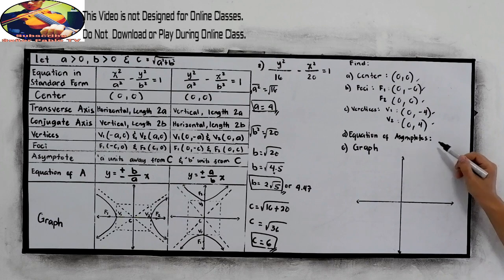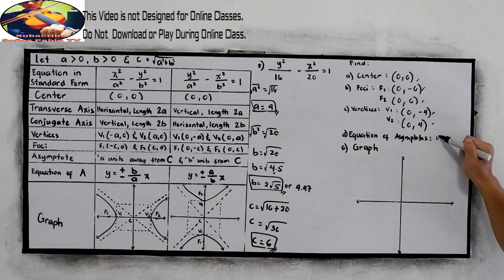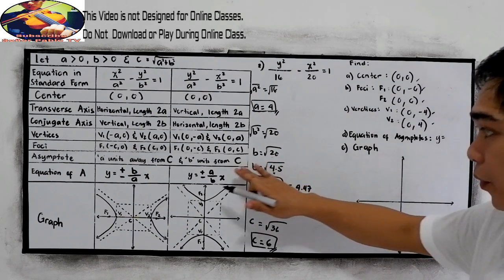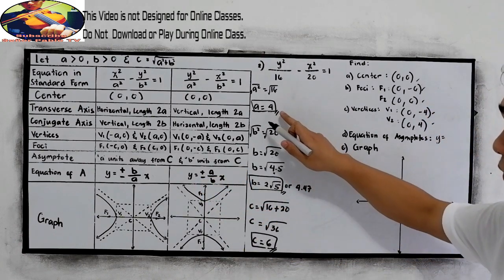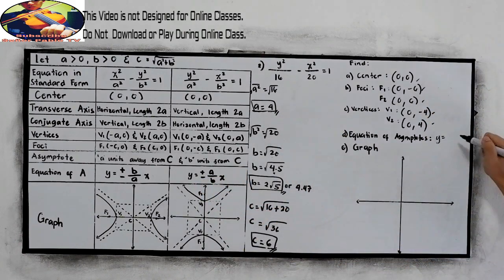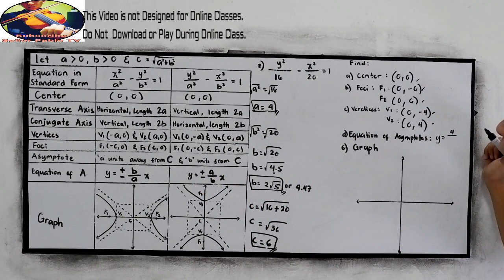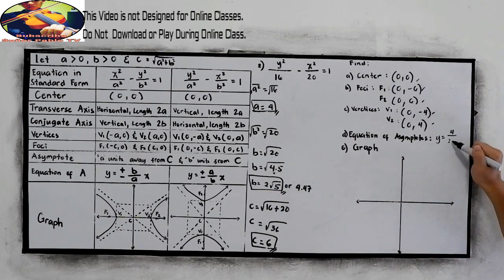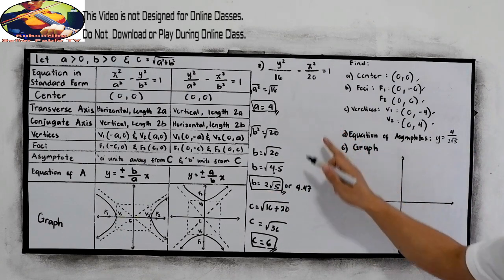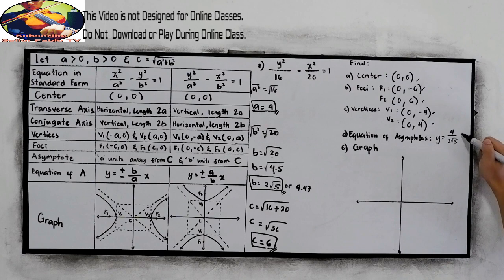Next, the equation of the asymptote. So y is equal to a over b times x. We have a equal to 4, over our b, which is 2 square root of 5, then times x.